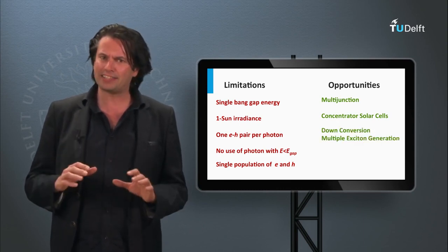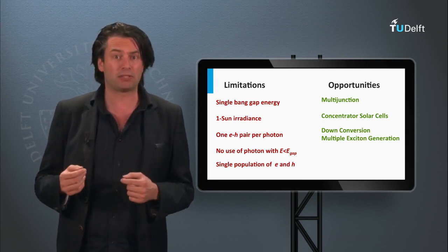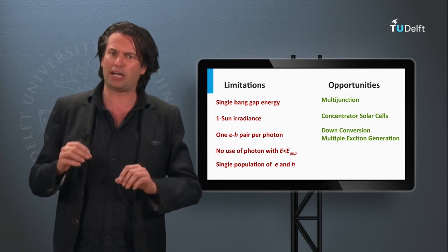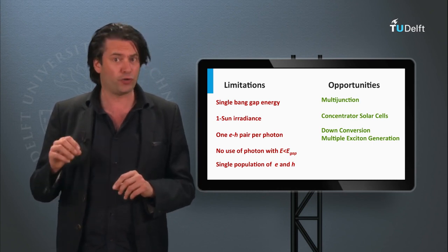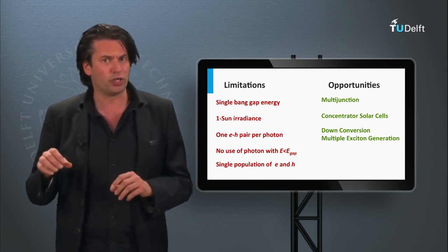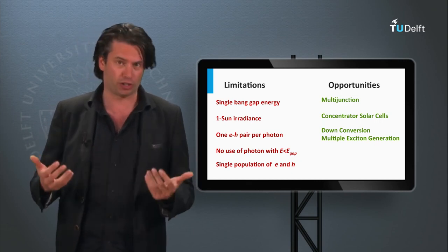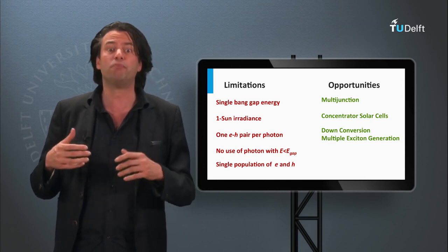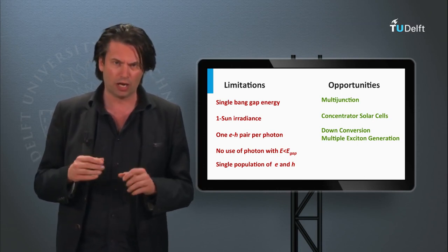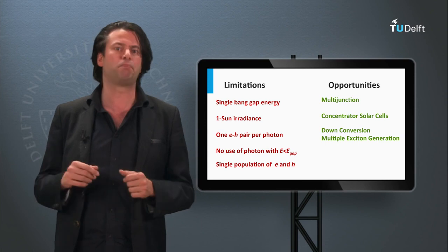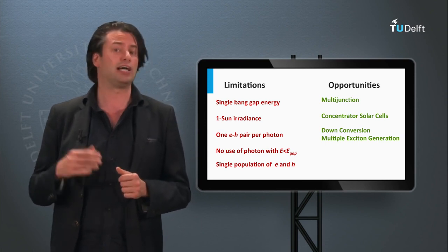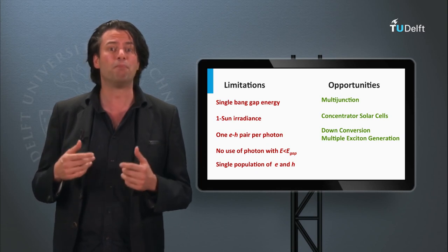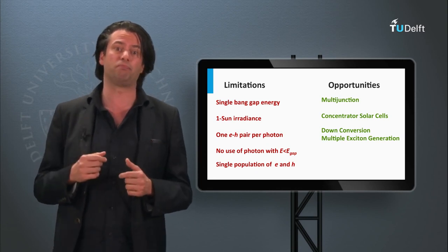The fact that every photon can only generate at maximum one collected electron can in theory be tackled by two approaches. The first one is down-conversion, which is a spectral conversion approach. The high-energetic photons are split into two or even more low-energetic photons before being absorbed in the PV active part. As a result, high-energetic photons can result in more than one electron being collected.